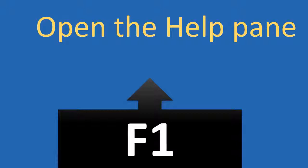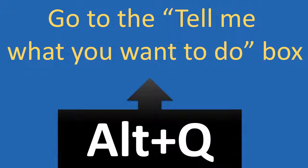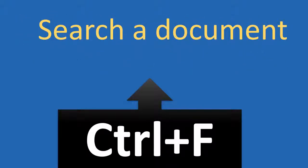F1: open the Help pane. ALT plus Q: go to the Tell Me What You Want To Do box. F9: refresh the field codes in the current selection. CTRL plus F: search a document.